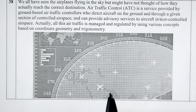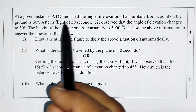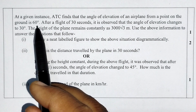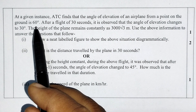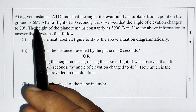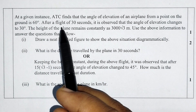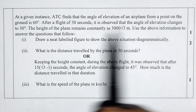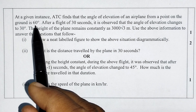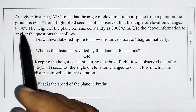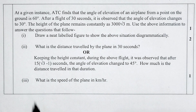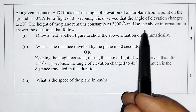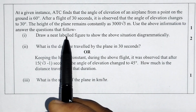This application is a trigonometry question. At a given instance, ATC finds that the angle of elevation from a point on the ground is 60 degrees. After a flight of 30 seconds, it is observed that the angle of elevation changes to 30 degrees. The height of the plane remains constant at 3000√3 meters. Use the above information to answer the questions that follow.